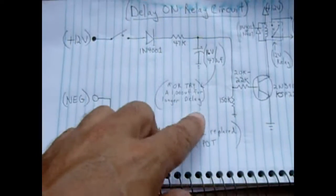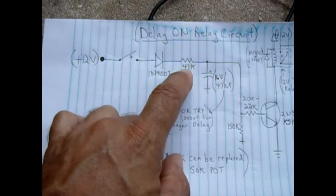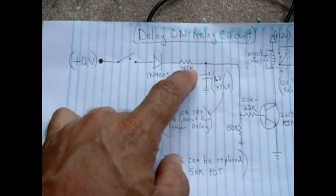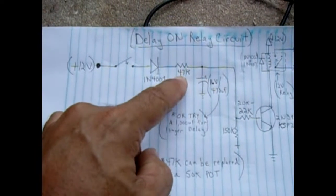You can also play with the value of the resistor, the 47k, which adjusts how fast current flows in to charge your capacitor. But I would prefer leaving that and just adjusting the values of the capacitors.